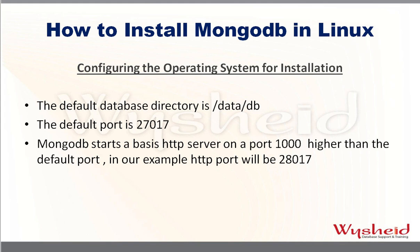For example, the default database port is 27017, so the HTTP server will be running on port 28017, which is 1000 higher than the default database port. If you want to install MongoDB with the default options, make sure that ports 27017 and 28017 are free, and that the directory /data/db has been created.